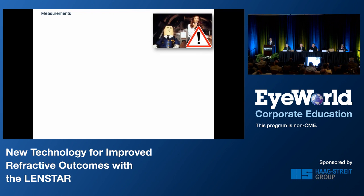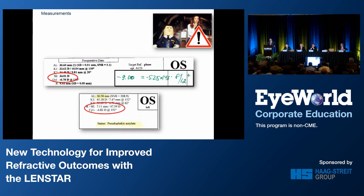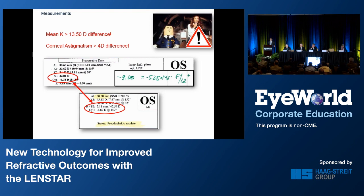I want to show you an extreme example of what can happen when one stops paying attention to details. This patient was referred to me several years ago with a huge myopic surprise following an uneventful cataract extraction. On a closer look, one can see that something is strange — a mean K value of 34 diopters is quite unusual. We repeated the keratometry measurements and, to our surprise, there were more than 13.5 diopters difference in the mean K values. Apparently, this lady was wearing her contact lenses during her pre-op evaluation. The take-home message: always be alert and validate your measurements. If something doesn't look right, repeat the measurements and try to figure out what's going on.